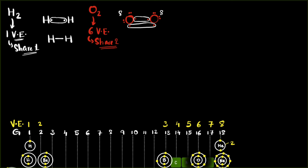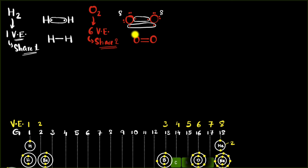How do we draw the final Lewis structure? Here are the two oxygen atoms — two bonds, so two lines. Then we have to show the lone pairs; these are called lone pairs because they do not participate in bonding, but it's important to show them. Do show the lone pairs in the Lewis dot structure. That is the dot structure for O₂.